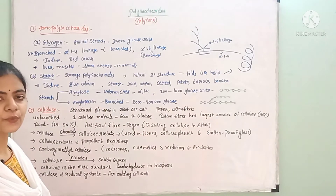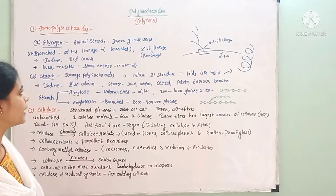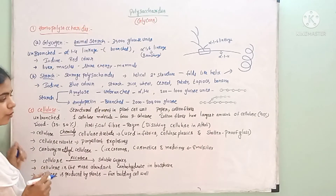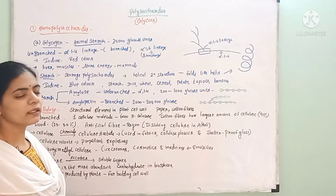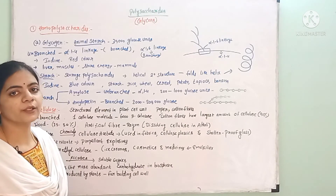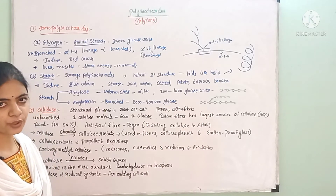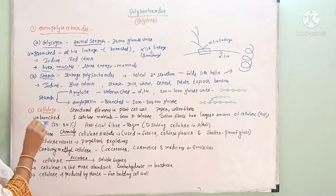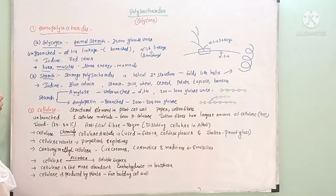The first example of homopolysaccharides is glycogen. Glycogen is animal starch. In animals and mammals, when there is excess carbohydrate, it is stored as glycogen in the liver and muscles.